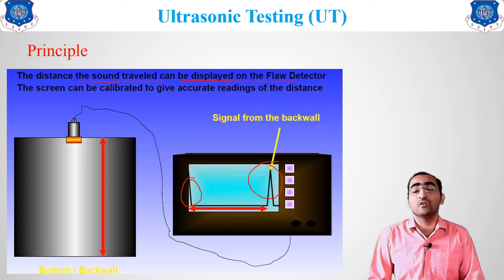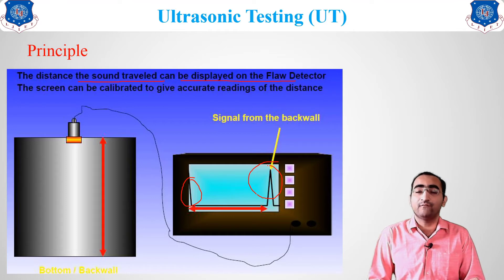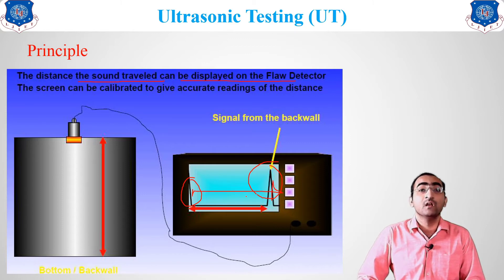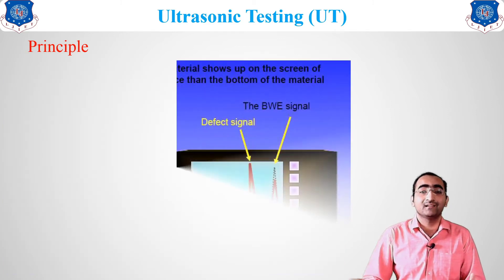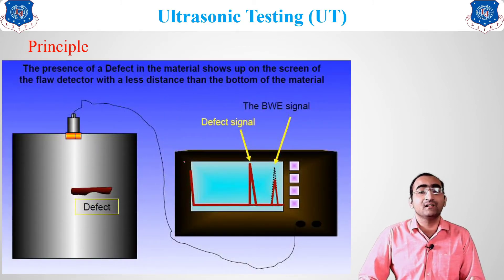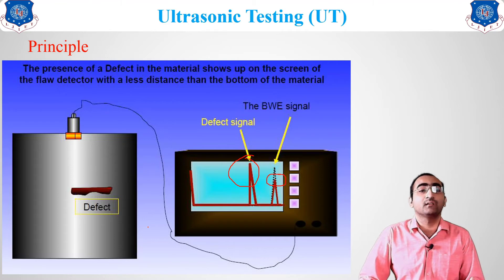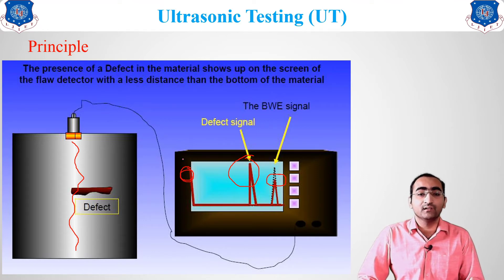From the signals we can determine defects. Using a calibrated defect-free material, we measure the time taken for the wave to travel. If the time is less than expected, there is a defect inside the material. If there is a defect, a defect signal peak appears on the CRO screen along with a shorter back-wall echo peak. During entrance there is one peak, during the defect there is another peak, and on hitting the back wall there is a third peak.